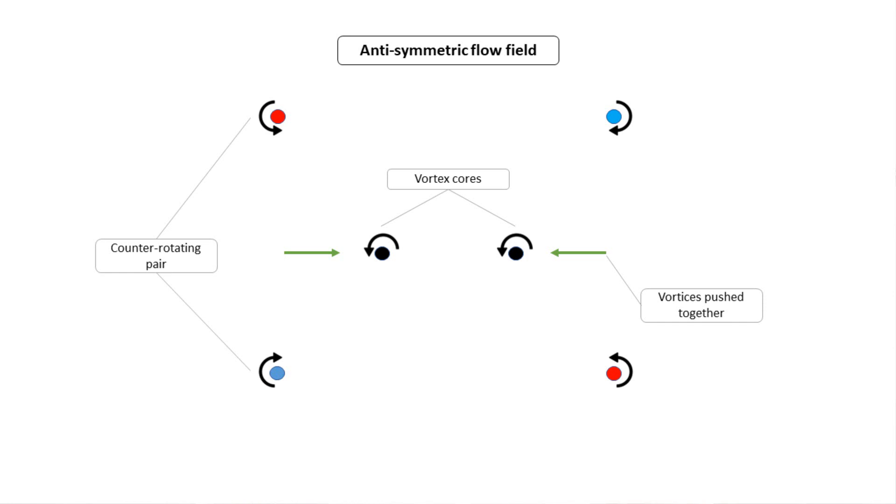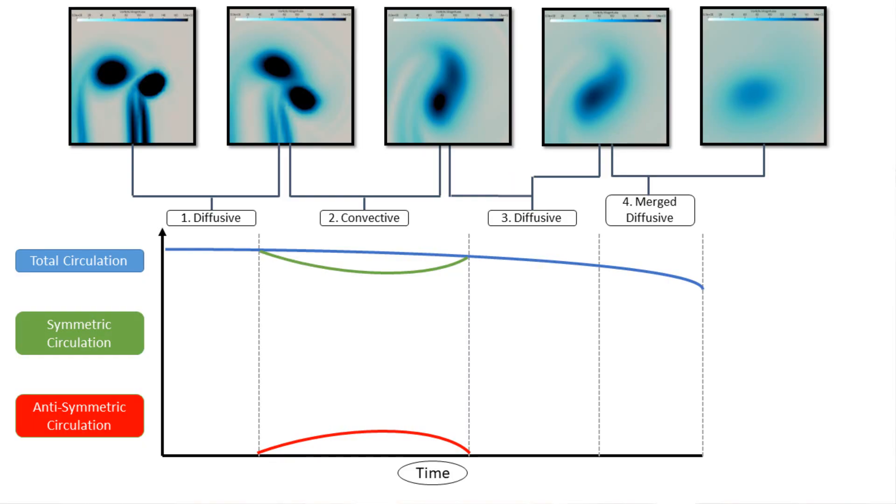So why is this so important? If you extracted the symmetrical flow field, you'd notice that there aren't actually any vectors which are pushing the cores together — that's all done through anti-symmetry. The anti-symmetric flow field shows two counter-rotating vortex pairs which are actually driving the cores together. This is the physical mechanism behind which co-rotating vortices merge. Furthermore, by looking at the total circulation in terms of symmetric and anti-symmetric components, it's found that during the convective stage, anti-symmetry is created, and thus is the defining characteristic behind the merger. Any excess anti-symmetry post-merge will be captured by the main region in its merged diffusive stage.